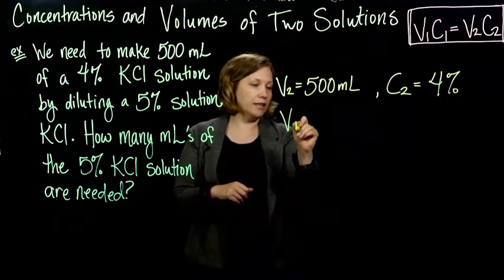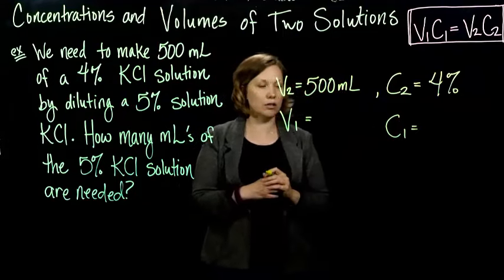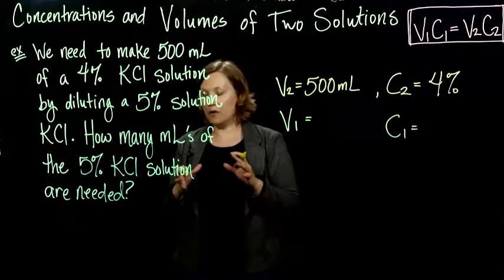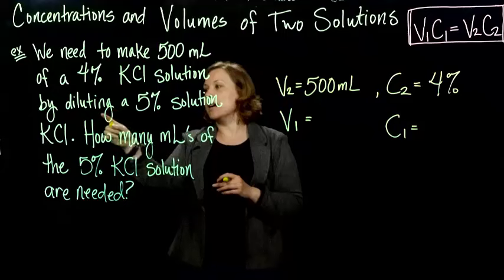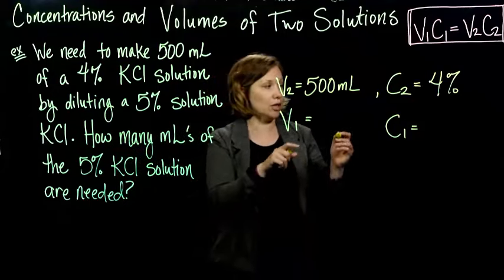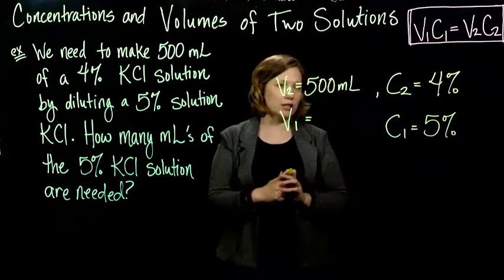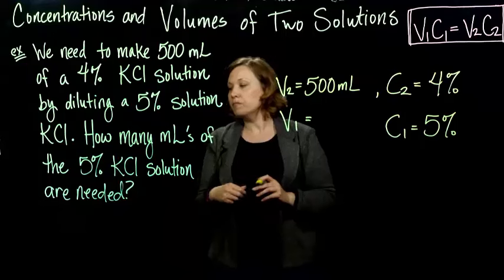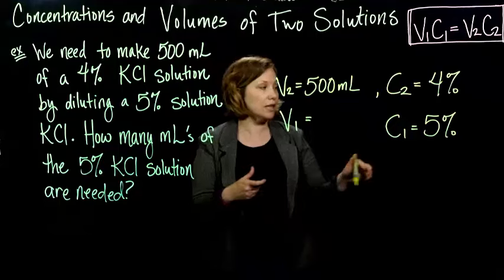So all I need now is my first volume and my first concentration. So what other information do I have? So they tell me we're going to dilute a 5% solution. So we're doing the dilution on a 5% solution. So my first concentration should be 5%. And then they ask us how many milliliters of the 5% solution are needed.